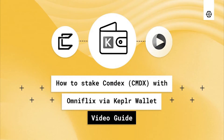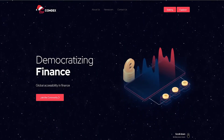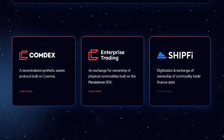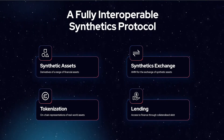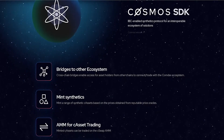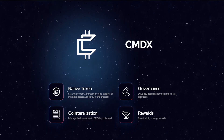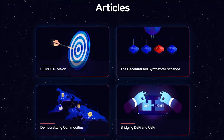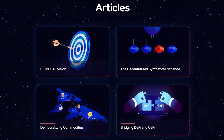Comdex is a synthetic asset protocol built on Cosmos SDK, powered by its native token CMDX. The Comdex platform allows users to mint and trade tokenized assets tied to real-world commodities, with collateral in crypto assets. CMDX, as any proof-of-stake token, can be staked to secure the Comdex blockchain and gain rewards up to 55% annual percentage rate — one of the best rates among current POS chains.